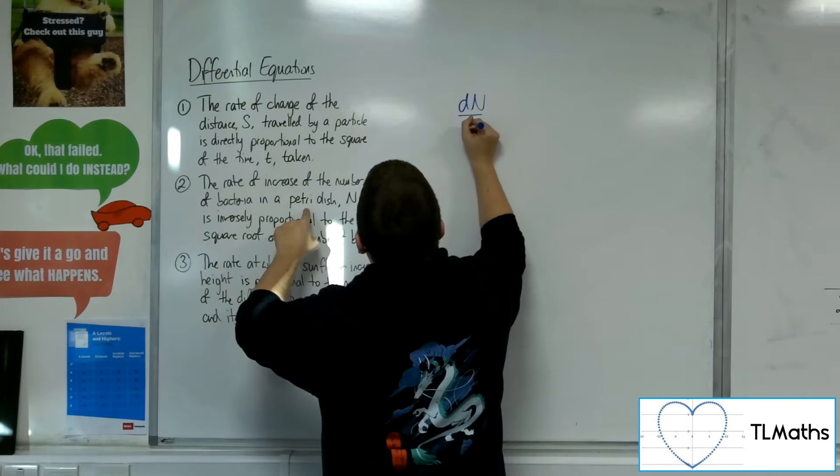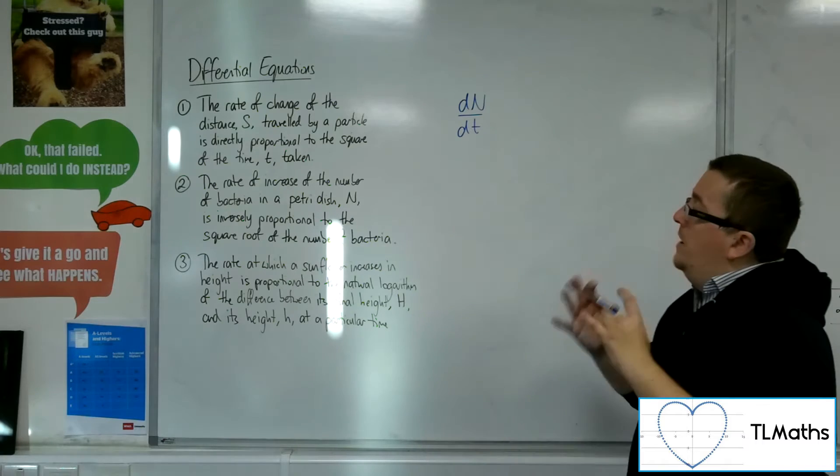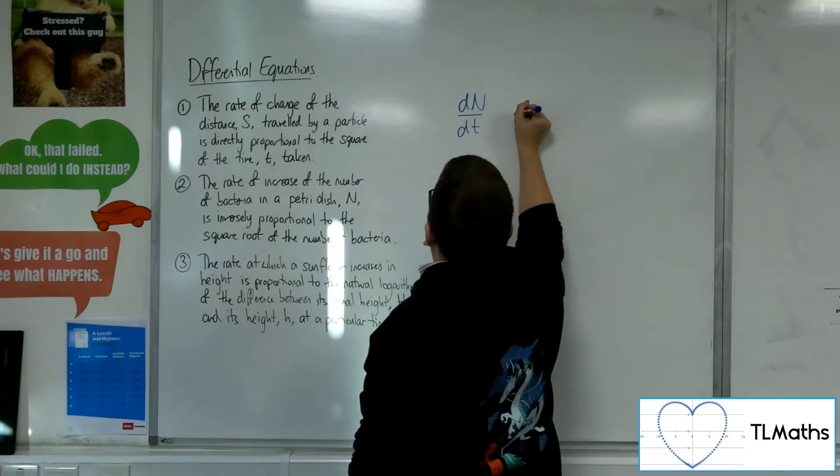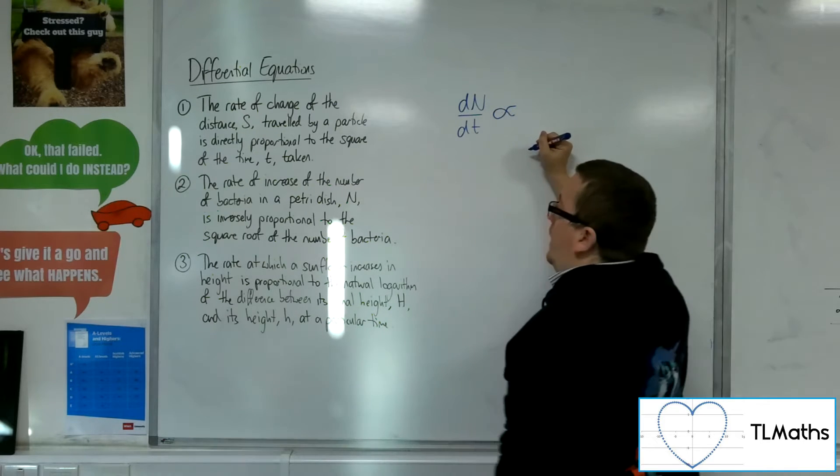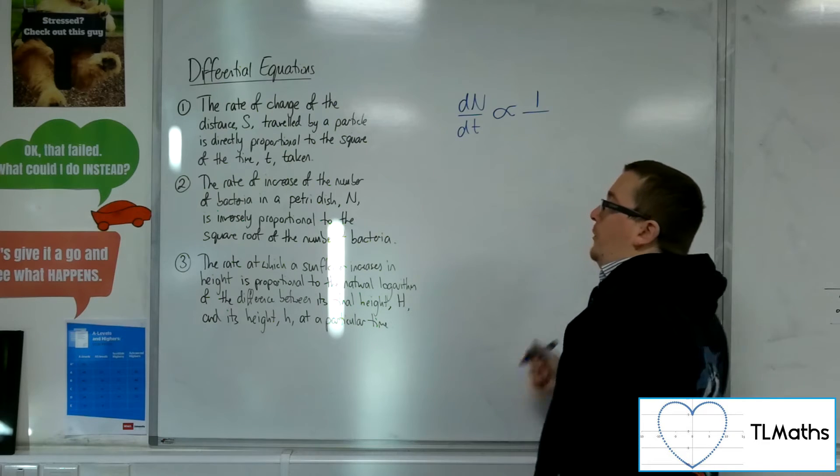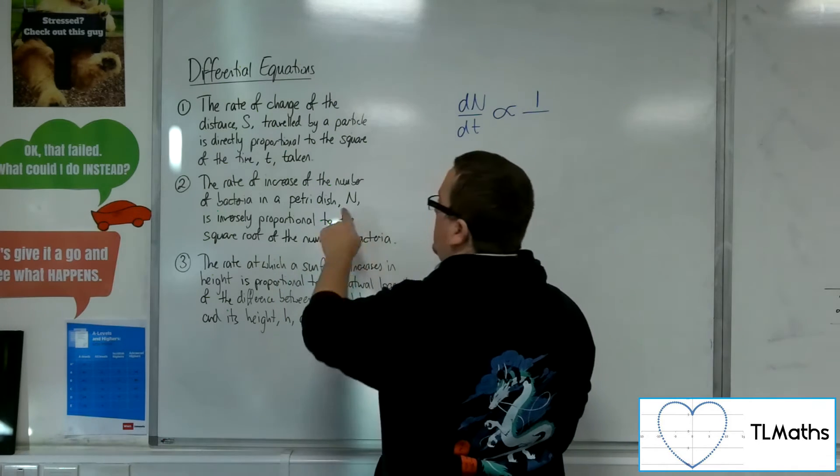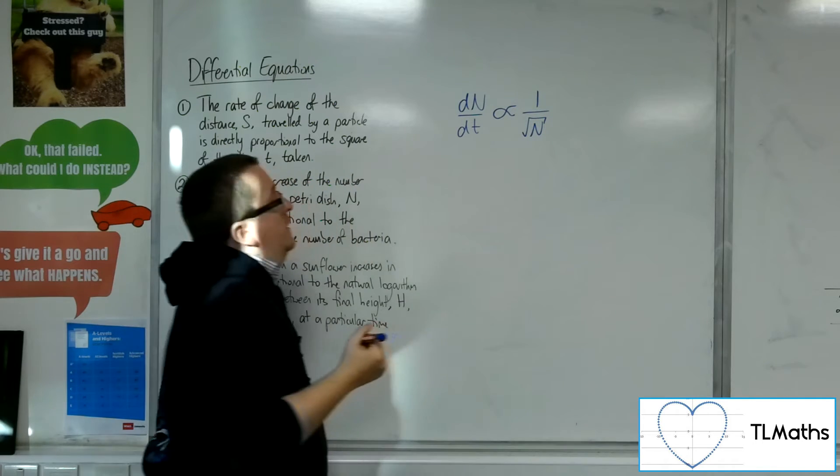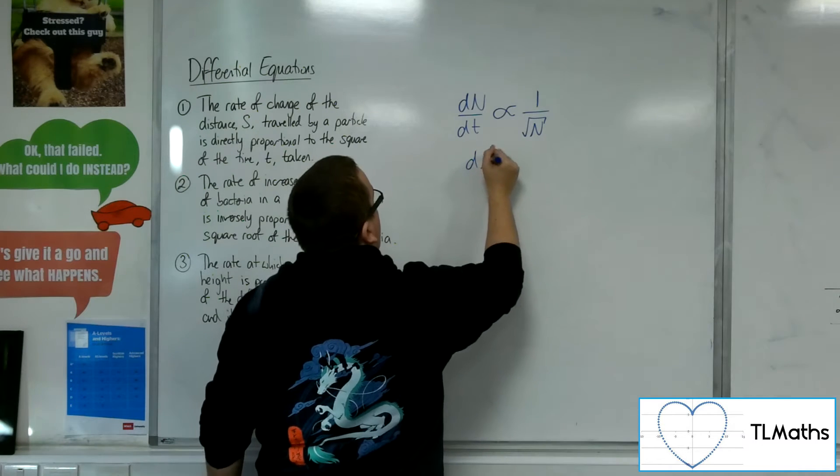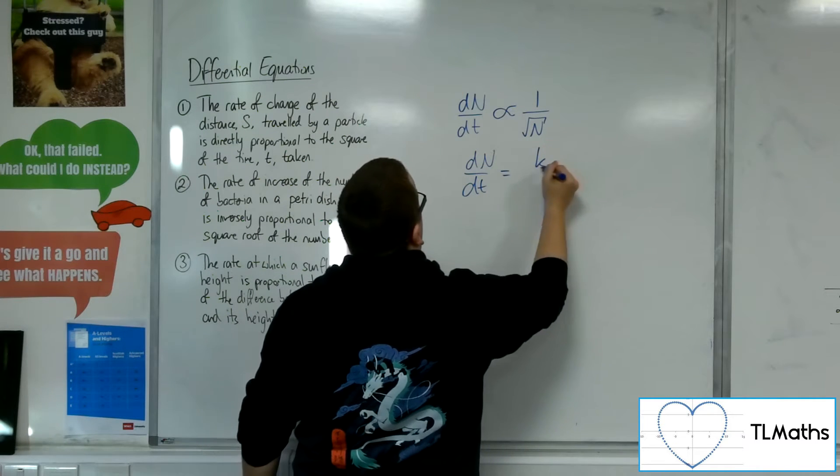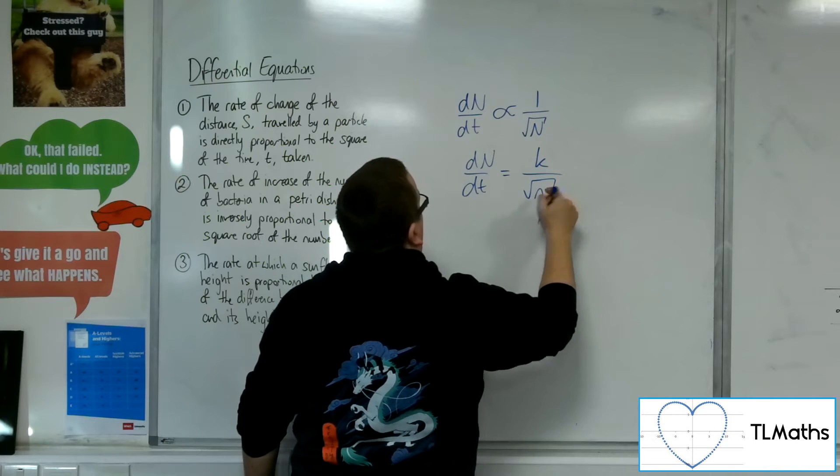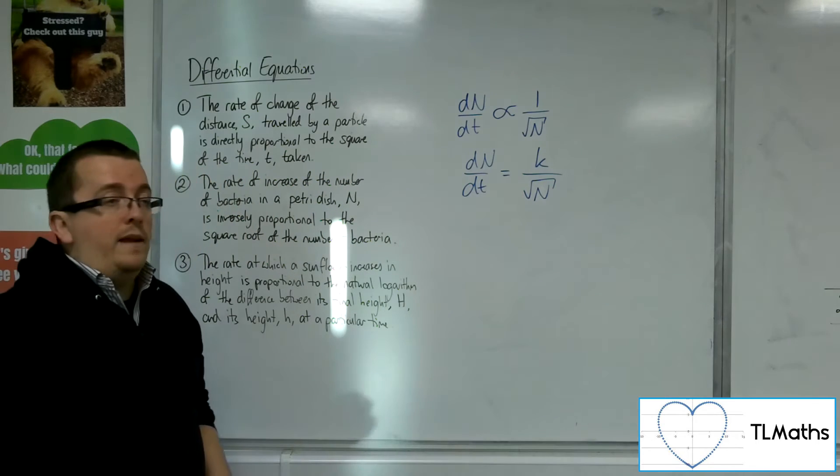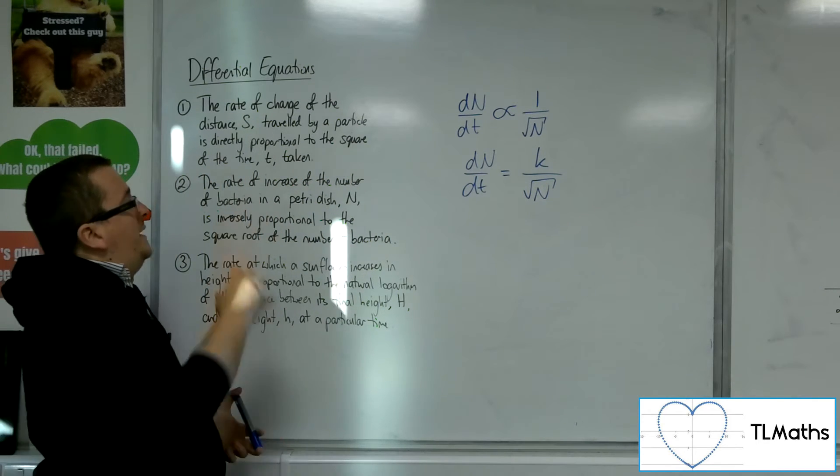so we'll write it as dn by dt. So the number of bacteria over time is inversely proportional to the square root of the number of bacteria. Now the number of bacteria is n, so the square root of n. So if we're saying that, then dn by dt would be equal to k lots of 1 over root n, or k over root n. And that would be number two.